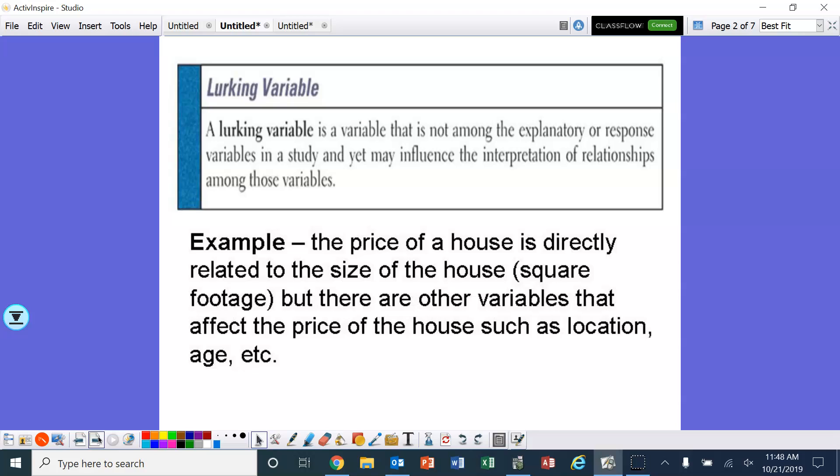The other word that I'd like to review real quick is the lurking variables. We talked about this when we were doing the scatter plots. Again, a lurking variable is a variable that is not among the explanatory or response variables in a study, and yet may influence the interpretation of relationships among those variables. For example, the price of the house is directly related to the size of the house, the square footage. However, there are other variables that affect the price, such as location, age, etc.